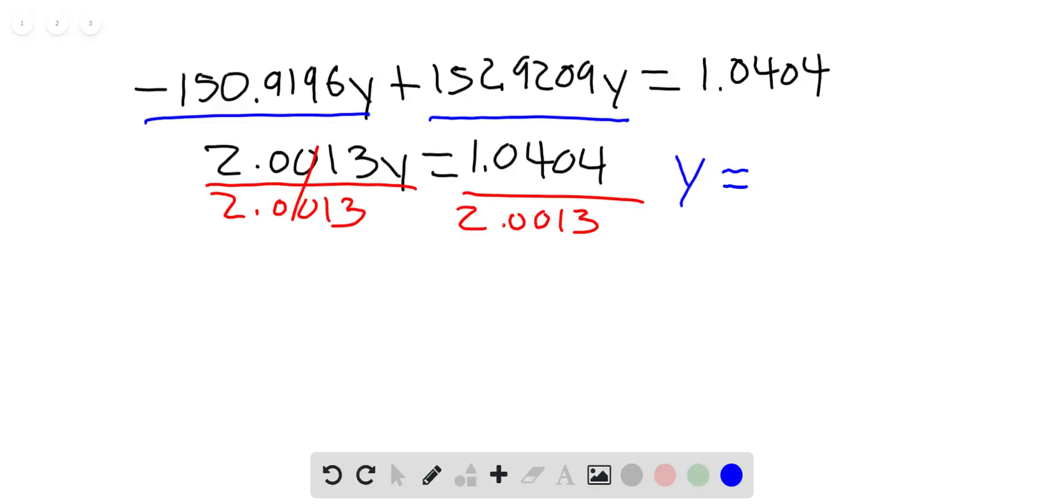We're dividing both sides by that number. Now y equals 0.5199, which is 51.99%.